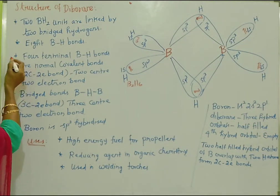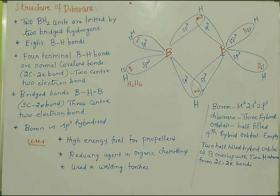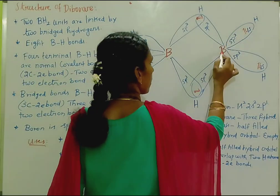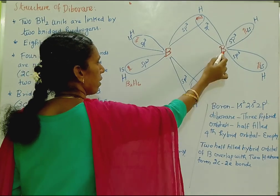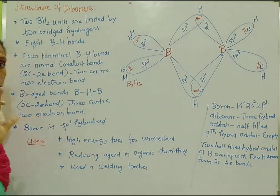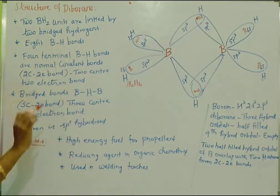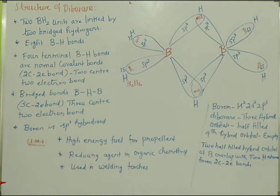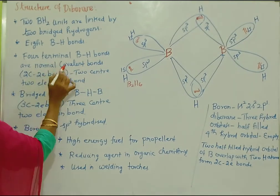In this structure there are eight B-H bonds total. There are four terminal BH2 groups. The four terminal BH bonds are normal covalent bonds — these terminal B-H bonds are standard covalent bonds.